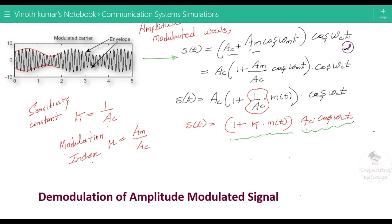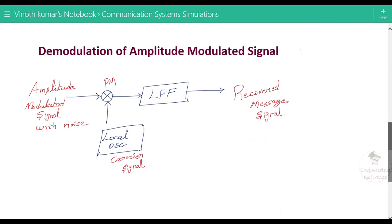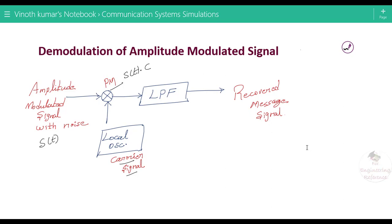We will see the impact of modulation index on the amplitude modulated wave in the next video. In a synchronized receiver of amplitude modulation, the received signal S(t) is multiplied using a product modulator with a locally generated signal whose properties are similar to the carrier signal. It is then passed to a low pass filter, after which we receive the recovered message signal.